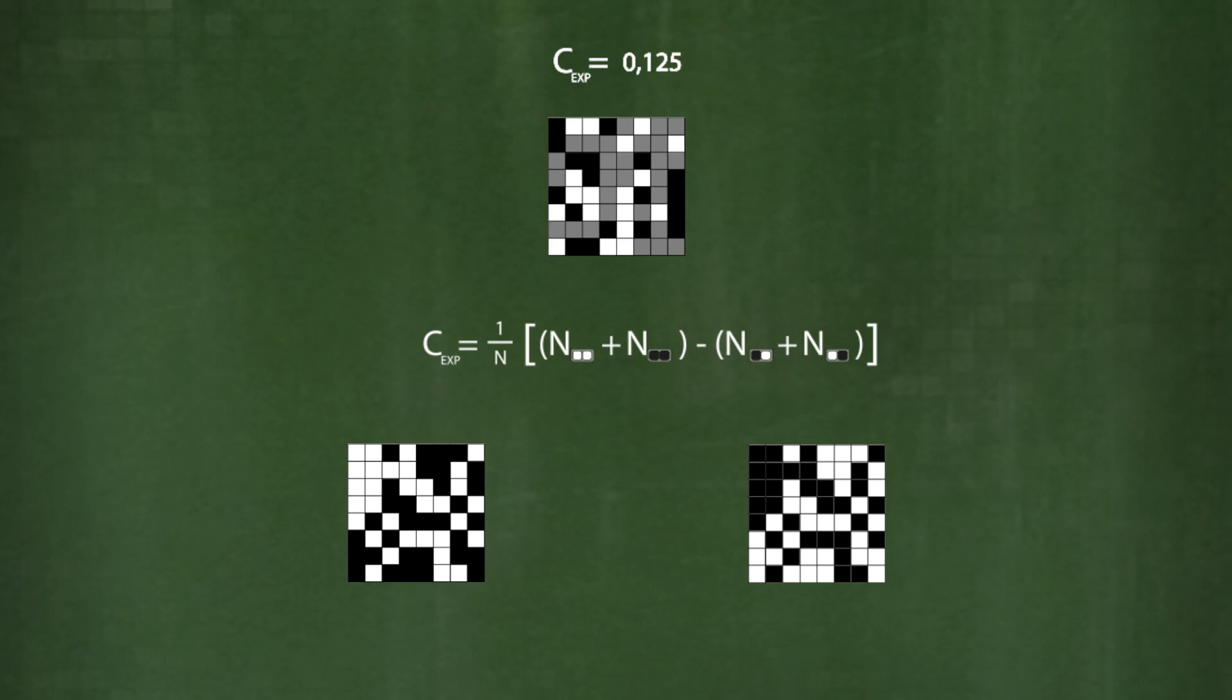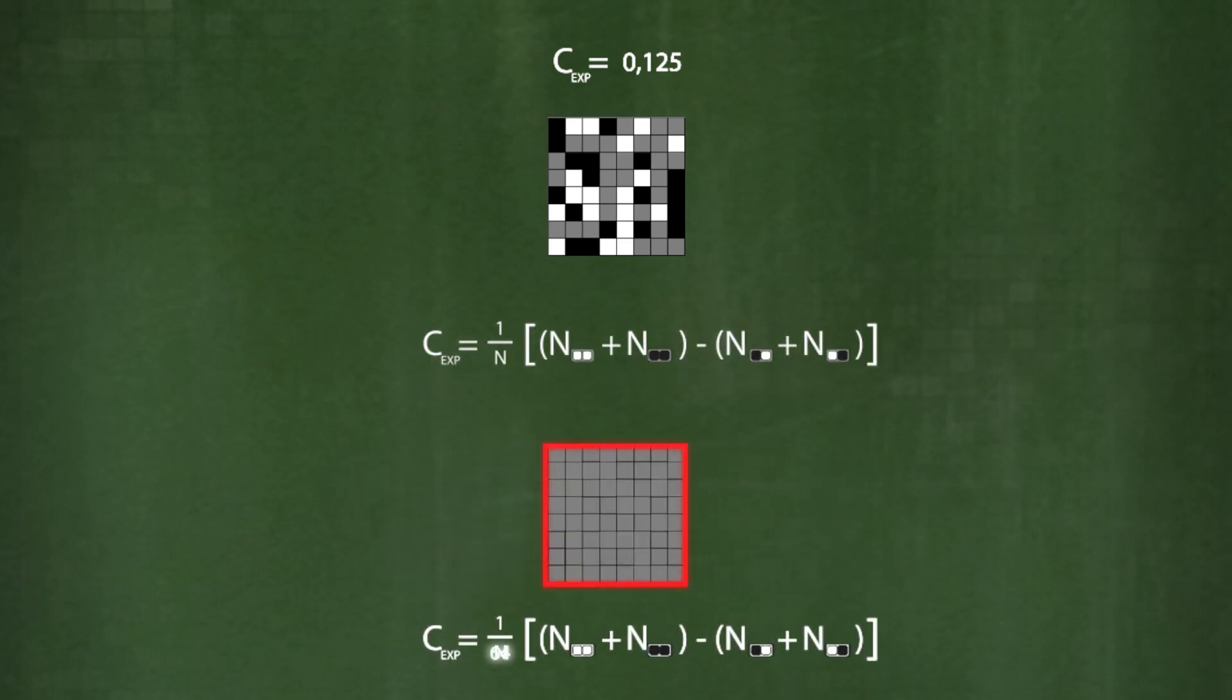If we compare the two random patterns from a coin, all fields become grey. We then obtain the result that the correlation c is equal to minus one. That is, anti-correlation.